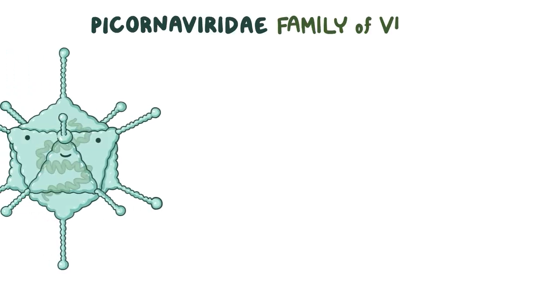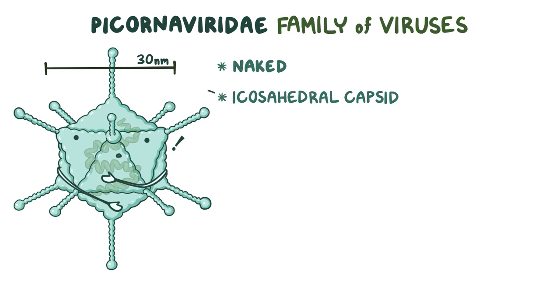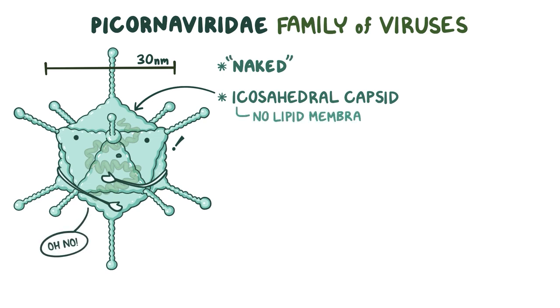Rhinovirus belongs to the Picornaviridae family of viruses. They are naked viruses, about 30 nanometers in diameter, and they're surrounded by an icosahedral capsid, which is a spherical protein shell made up of 20 equilateral triangular faces. They're naked because the capsid isn't covered by a lipid membrane.